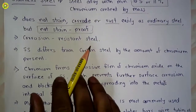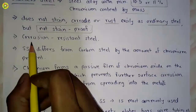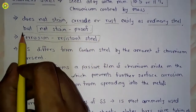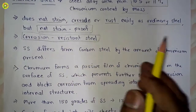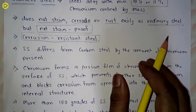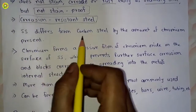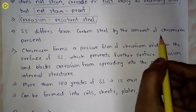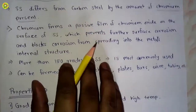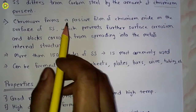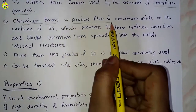Stainless steel is also called corrosion resistant steel as it does not corrode easily. Stainless steel differs from carbon steel by the amount of chromium present. Chromium forms a passive film of chromium oxide on the surface of stainless steel.